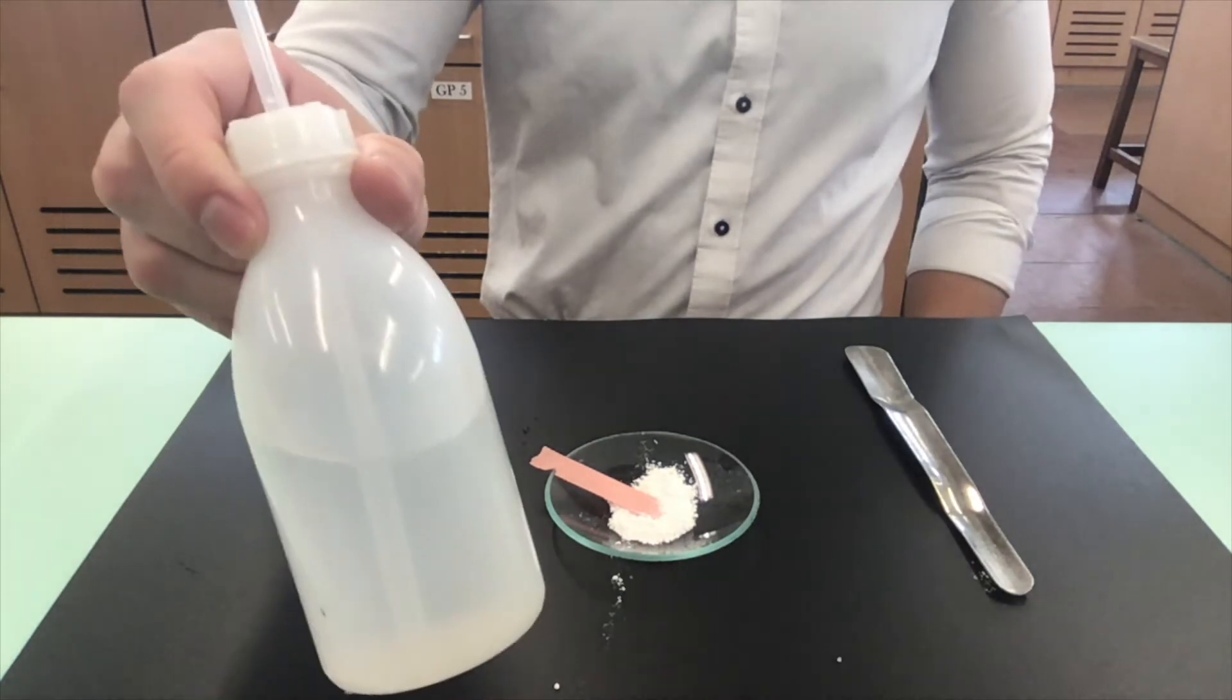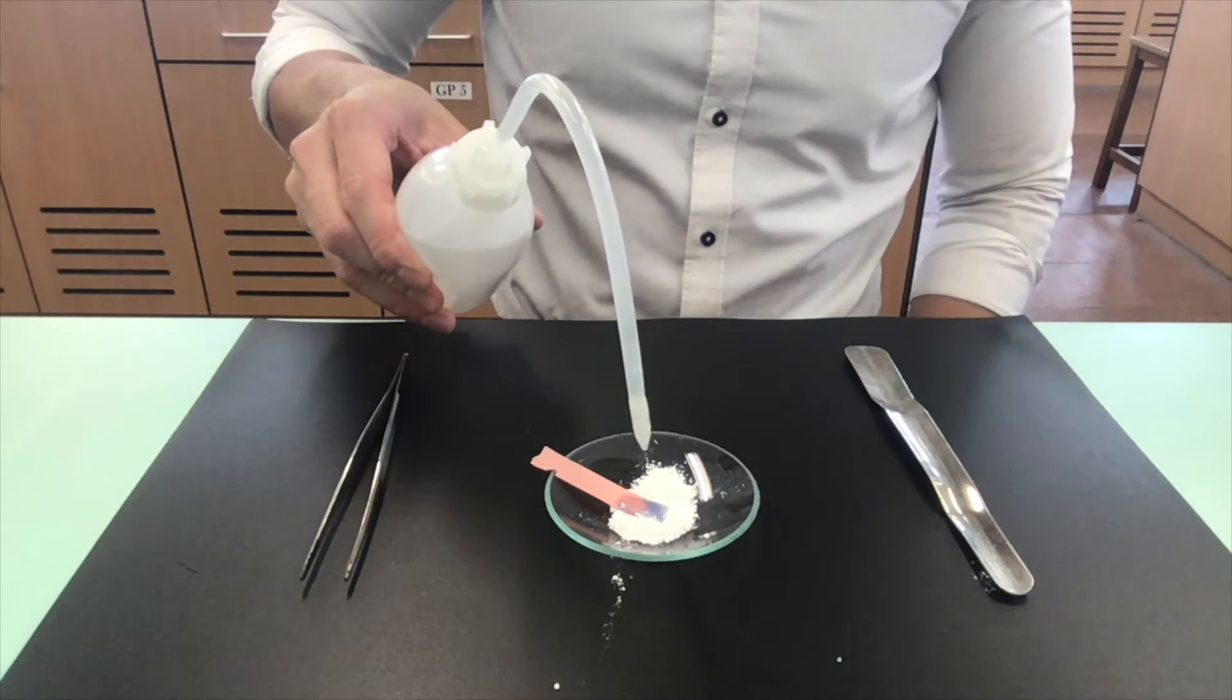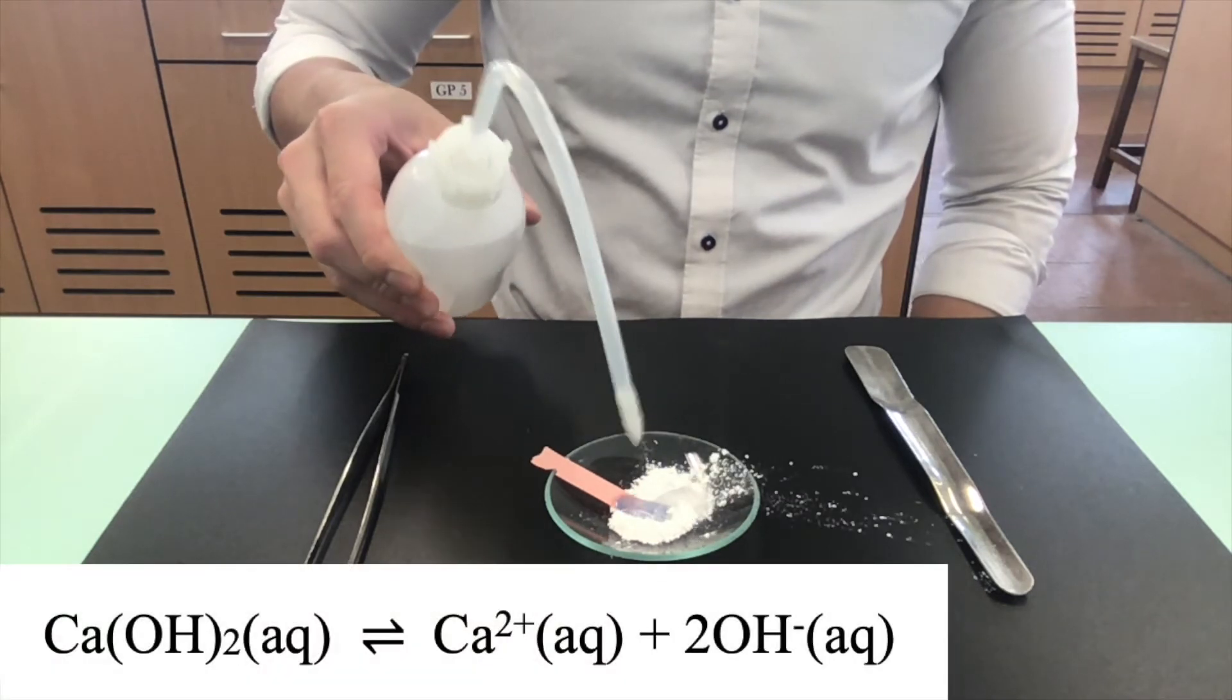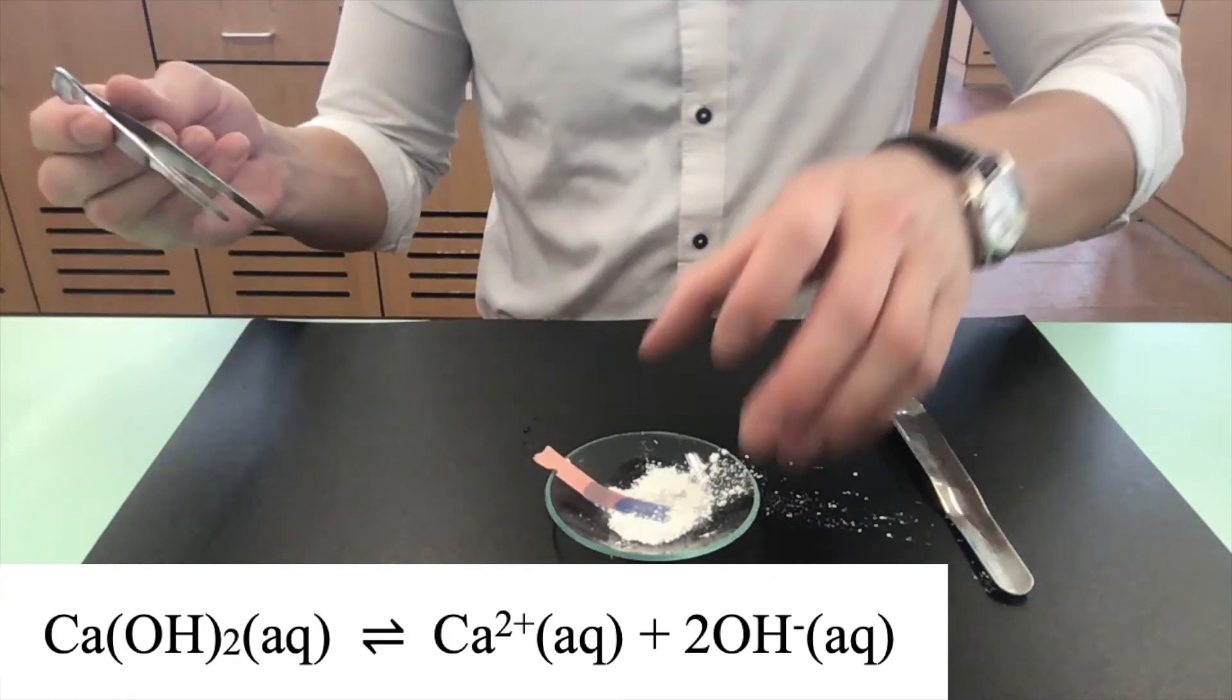We will now add distilled water to the sample. The red litmus paper turns blue. It shows that water is necessary to show the alkaline property of the alkali.